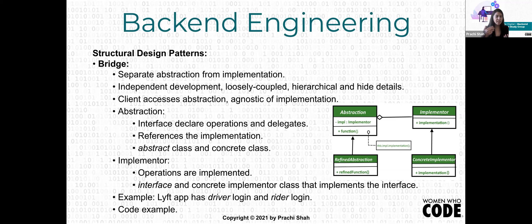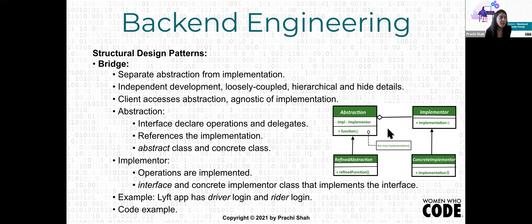In the Lyft example, driver and rider objects may have common functionality like first name, last name, and address. Other fields and methods differ depending on the domain object. In the UML diagram, we have an abstract class that just declares functionality, a concrete class that defines what that abstraction looks like, an interface that defines common functionalities, and a more concrete implementation showing what each object's implementation looks like.